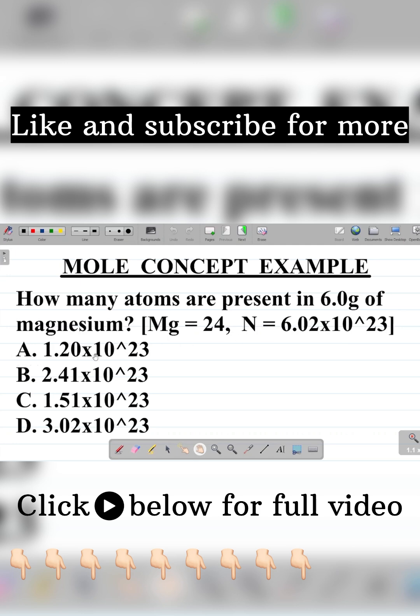Here are your options. Option A, 1.20 times 10 to the power 23. Option B, 2.41 times 10 to the power 23. Option C, 1.51 times 10 to the power 23. And option D, 3.02 times 10 to the power 23.